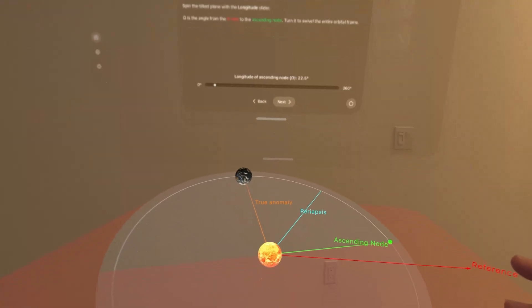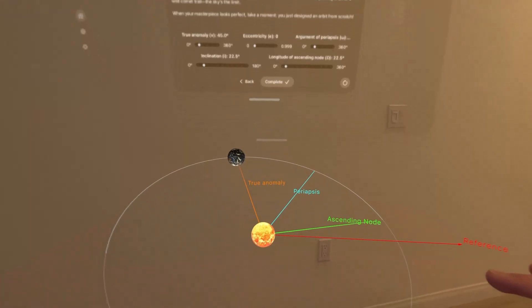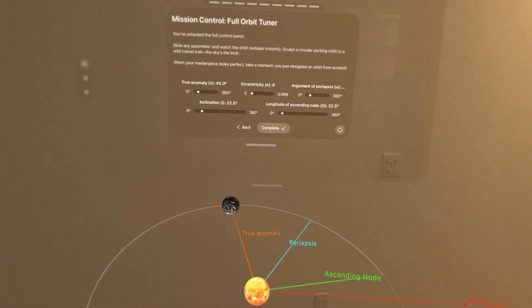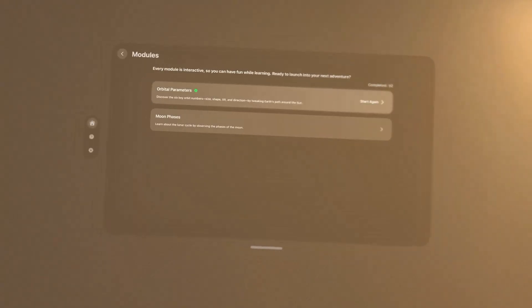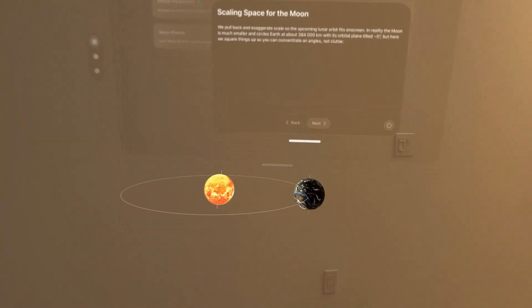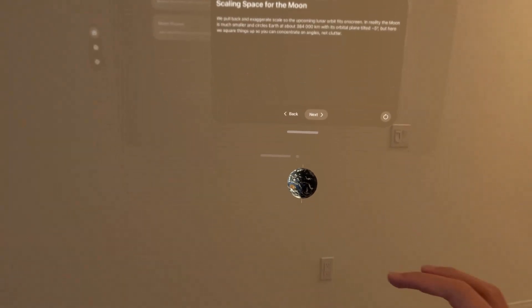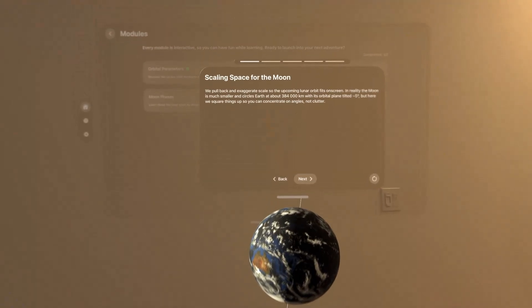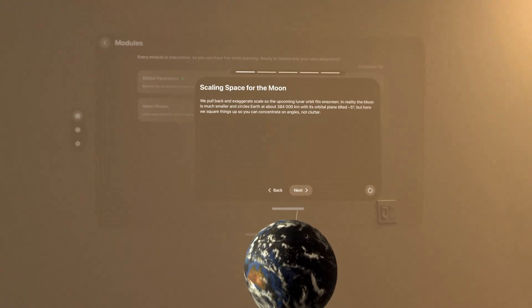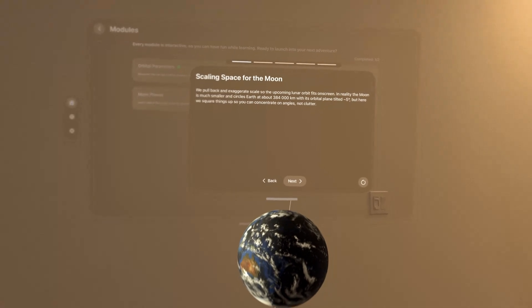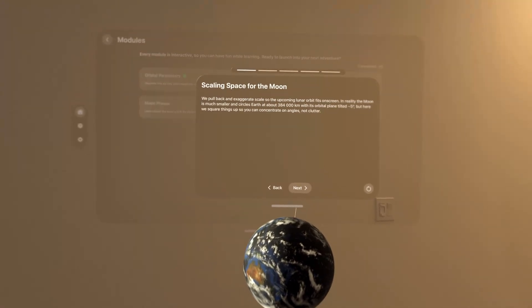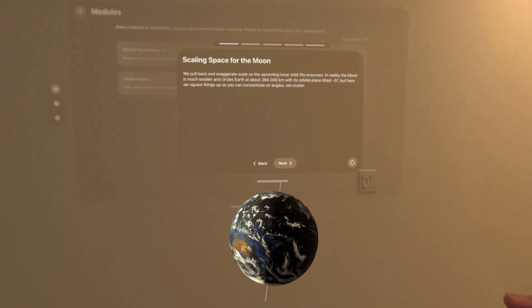Alright, let's see what else. Cool. You guys remember like radius of a circle and all the angles. Nice. Alright, let's check out the moon's phases. Scaling space for the moon. We pull back an exaggerated scale. So the upcoming lunar orbit fits on screen. In reality, the moon is much smaller and circles the earth. Okay.